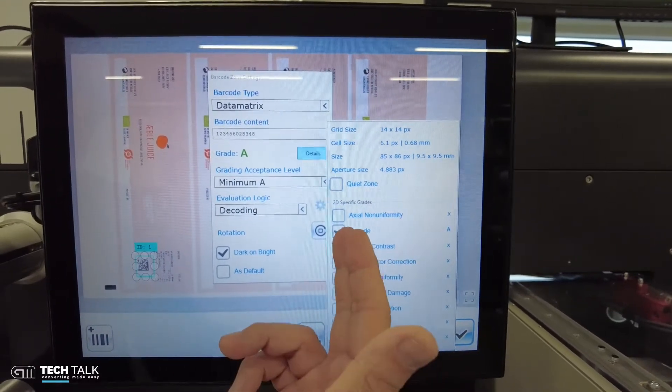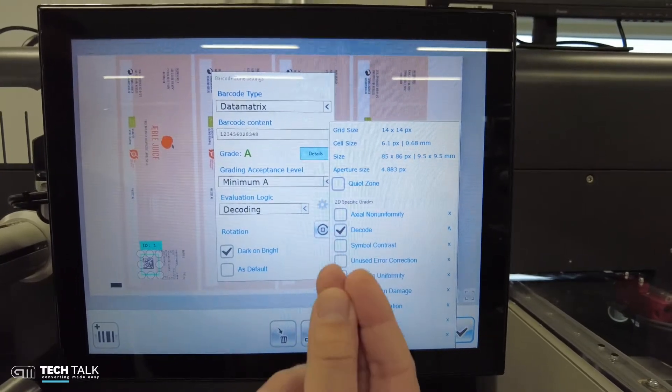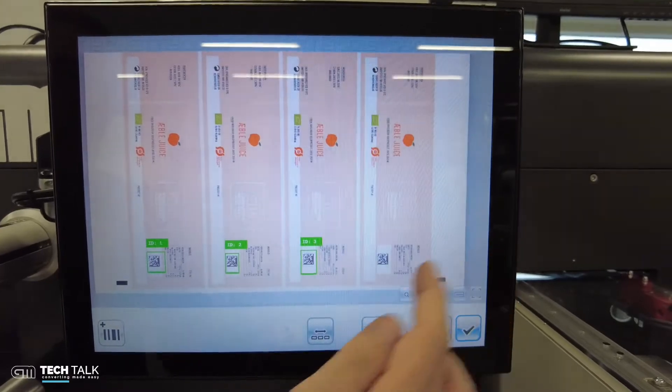In this case we selected only the decoding, which means we will make sure that the code is readable and correctly printed without giving additional information about the grading quality.